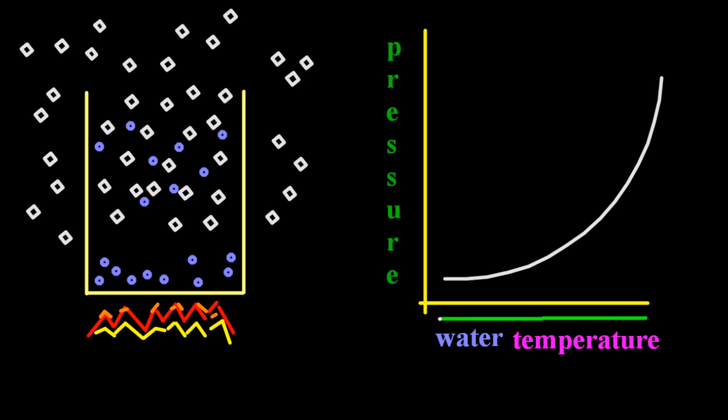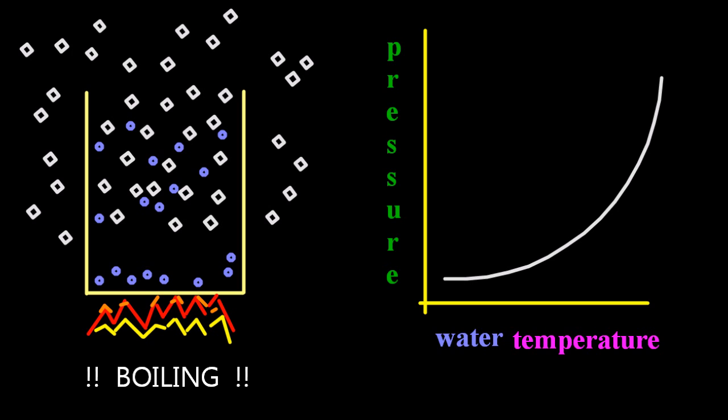Then something clever happens. As the water temperature increases, the vapour pressure increases until you get to when it boils. Now, when it's boiling, that's different to evaporating. There's bubbles coming off, and you've reached, for the case of water, 100 degrees centigrade.